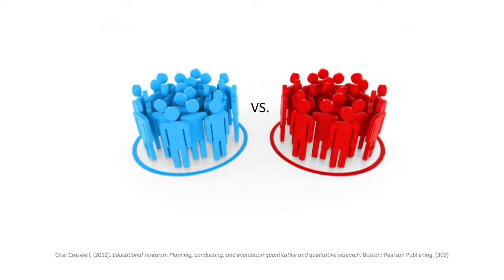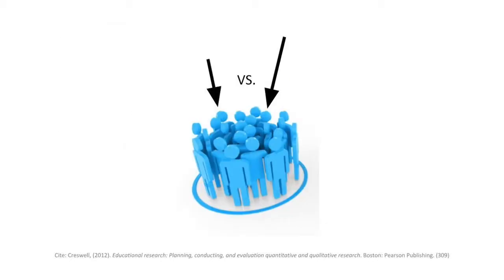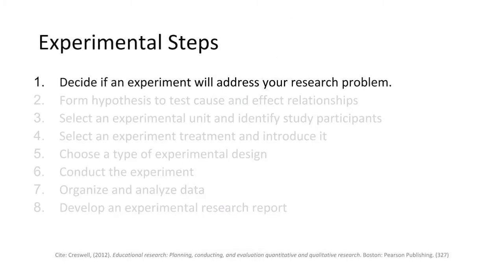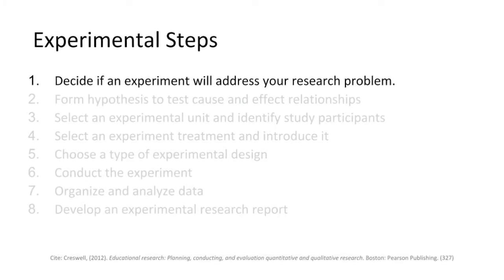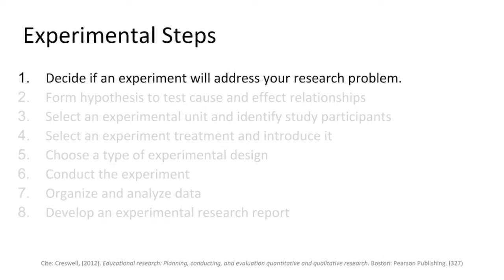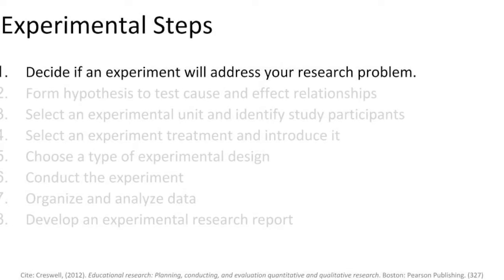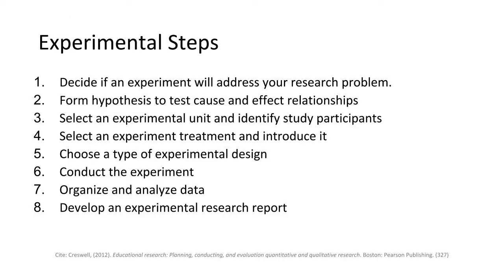In experimental design, there are a couple of forms it takes on. We can look at between-group experimental designs or within-group experimental designs. The key decision is whether or not an experiment is the right course of study for your problem. Once you've identified that an experiment is the right way to address your research problem, all you're doing from there is trying to set up an experiment to eliminate as many threats to your validity as possible.